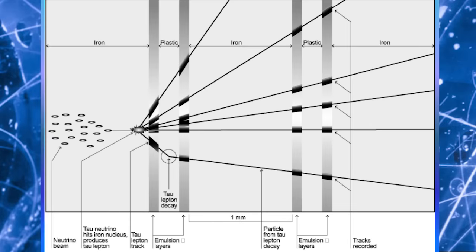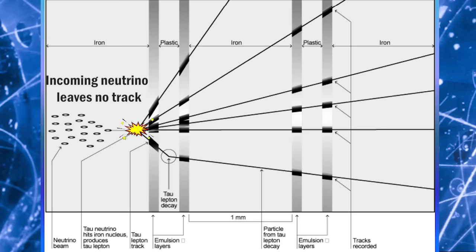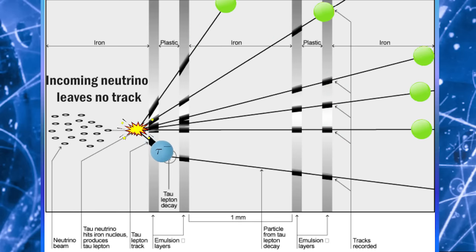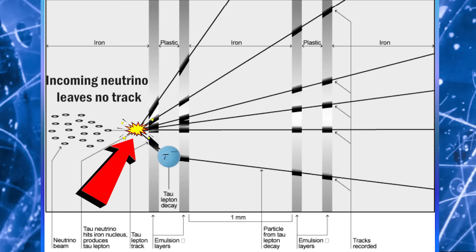Tau neutrino interactions in such a detector are characterized by several features. The neutrino is neutral and leaves no track in the emulsion. However, when it does interact in the emulsion, it produces a charged Tau lepton and various other charged products that are picked up by the emulsion, and all point back to the same point in space — the point where the Tau neutrino interacted with the detector. So the first telltale sign of a Tau neutrino interaction is a vertex of charged particles all emanating from the same point in space, with no charge track leading into the vertex.